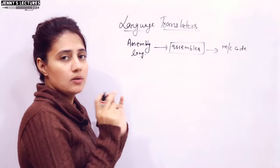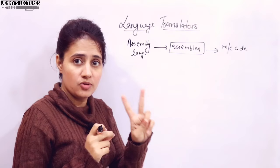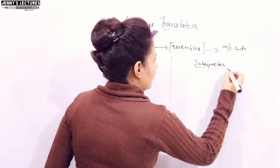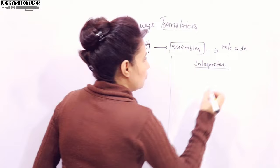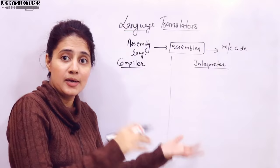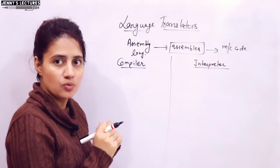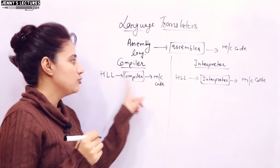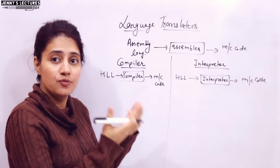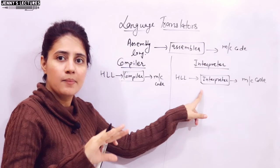For high-level languages, there are two translators for converting them into machine code: compiler and interpreter. Both are used to convert a high-level language program into machine code — zeros and ones. The key difference is: a compiler converts it before the execution of the program, whereas an interpreter converts it while the program is executing, while the program is running.